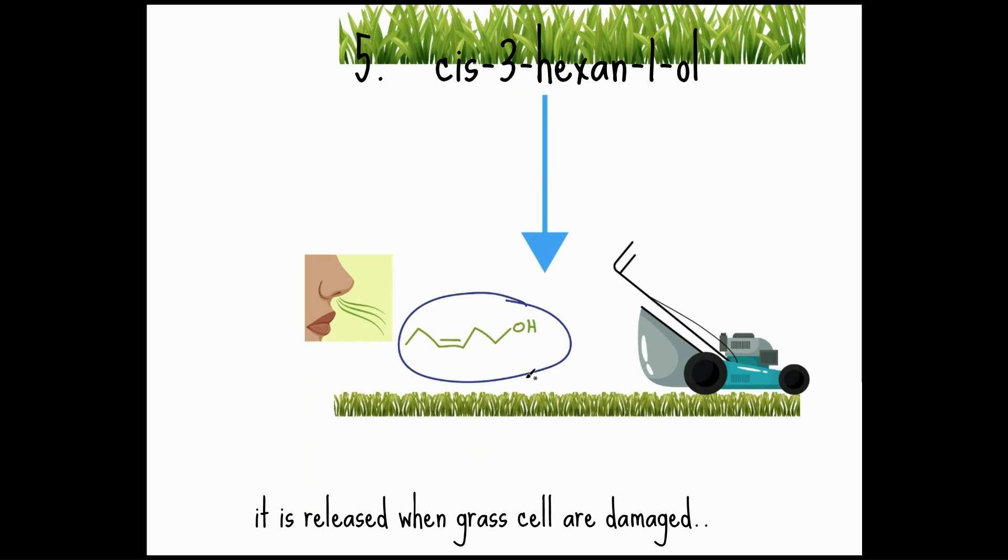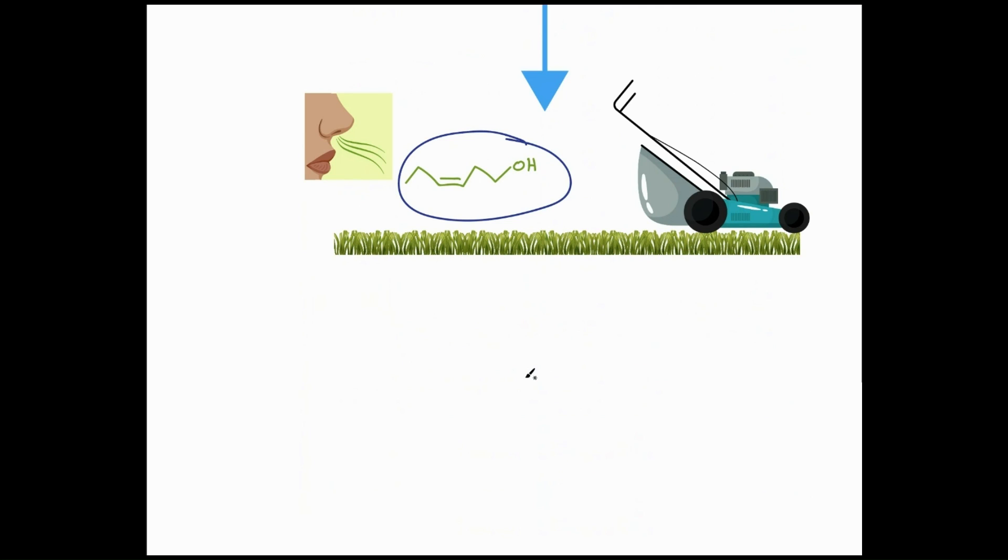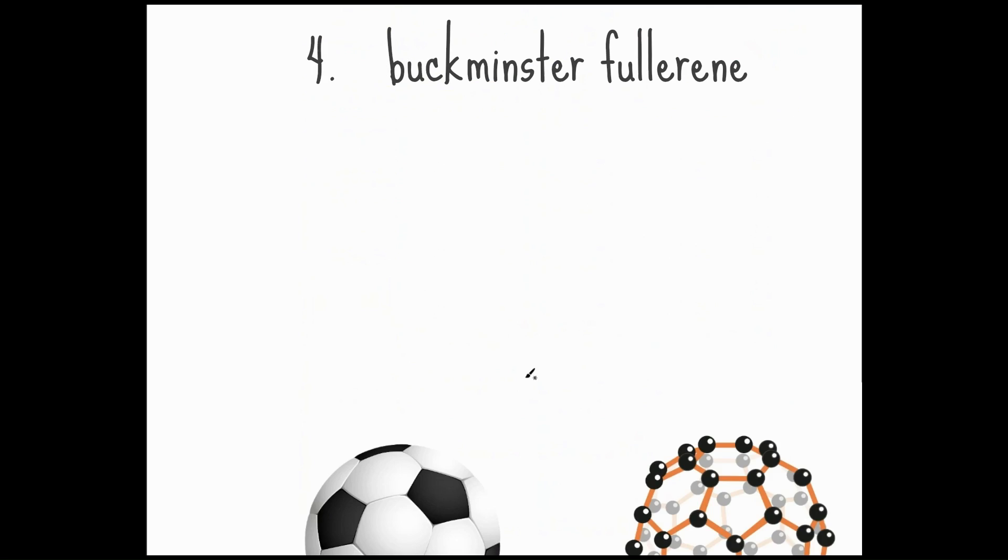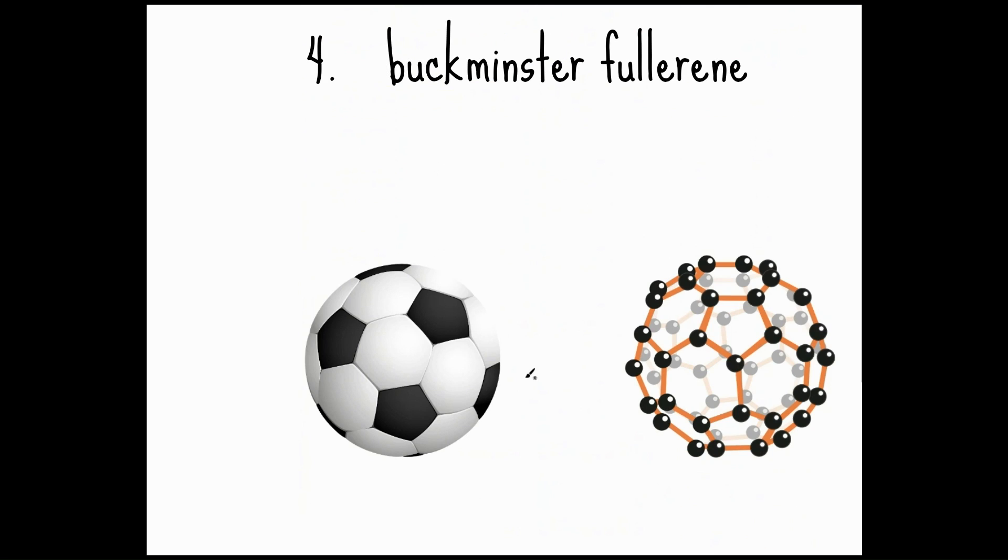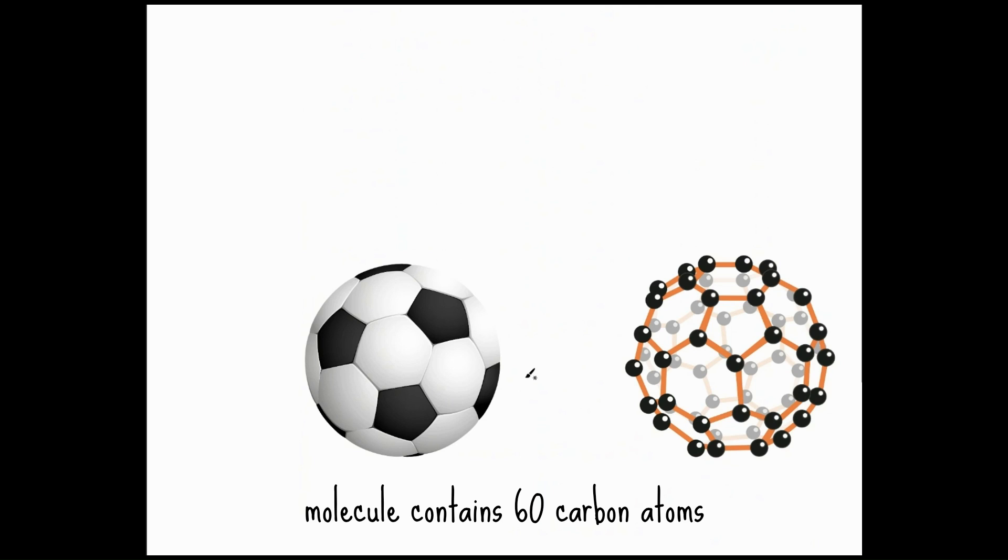Okay, at number four, we have the Buckminster Fullerene or Buckyball molecule, which has the exact same structure of an old school football. So as you can see, an old school football, as was used in the 1970 World Cup in Mexico, has a pentagon surrounded by five hexagons. So one, two, three, four, five. And a Buckyball has exactly the same structure. So you can see a pentagon here surrounded by five hexagons.